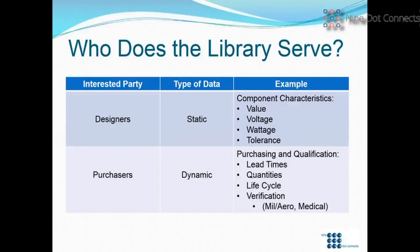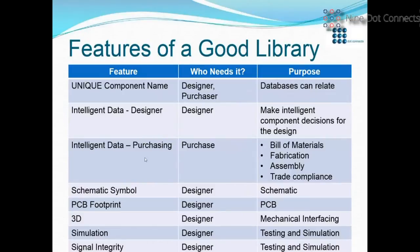Purchasers, however, work in a marketplace of fluctuations — lead times are changing, quantities are changing, life cycles are changing, and even part verification can change over time, especially in mil-aero or the medical field. They're dealing with dynamic data. So when we deal with the library, we really have to think of both the designer and the purchaser. The features of a good library go beyond symbols, footprints, and 3D — we must also look at intelligent data, which I call parameters.